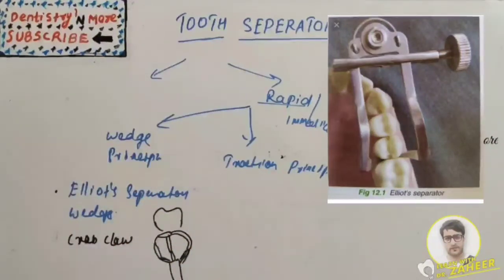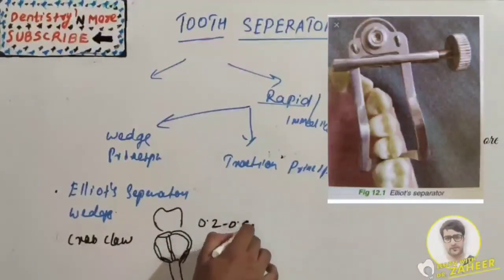Separation should not be more than thickness of periodontal ligament, that is 0.2 to 0.5 mm. Maximum separation should be between 0.2 to 0.5 mm. It's used for examination and polishing of final restoration.